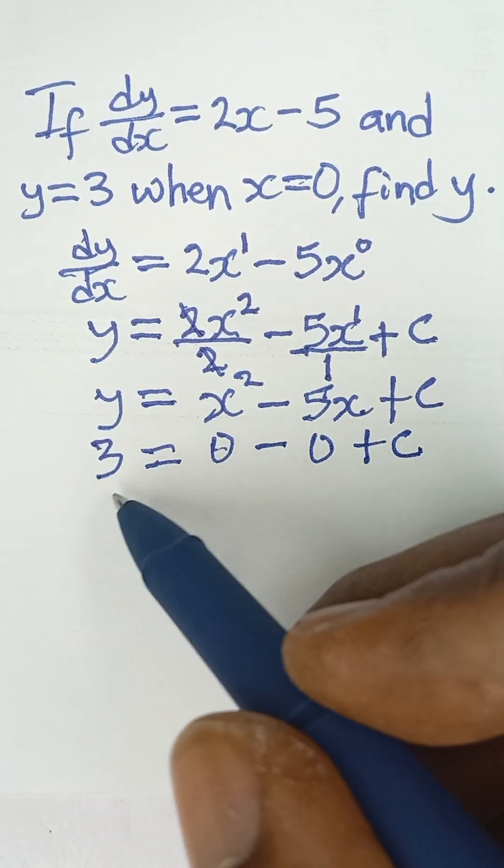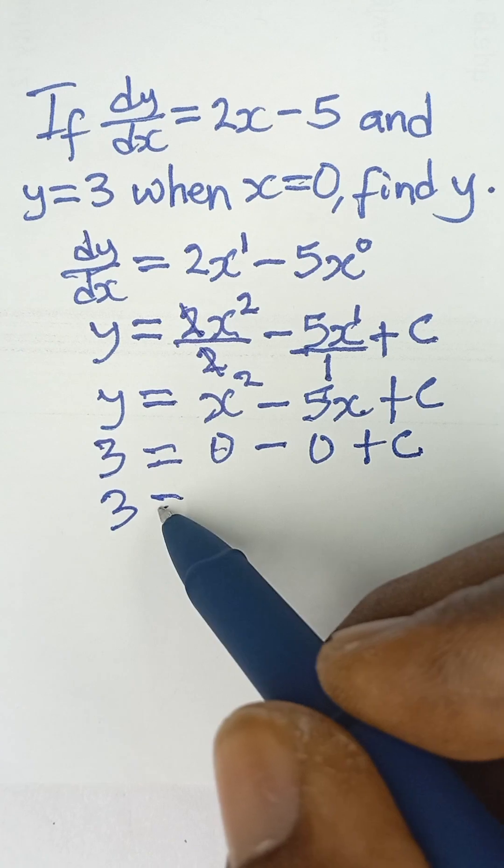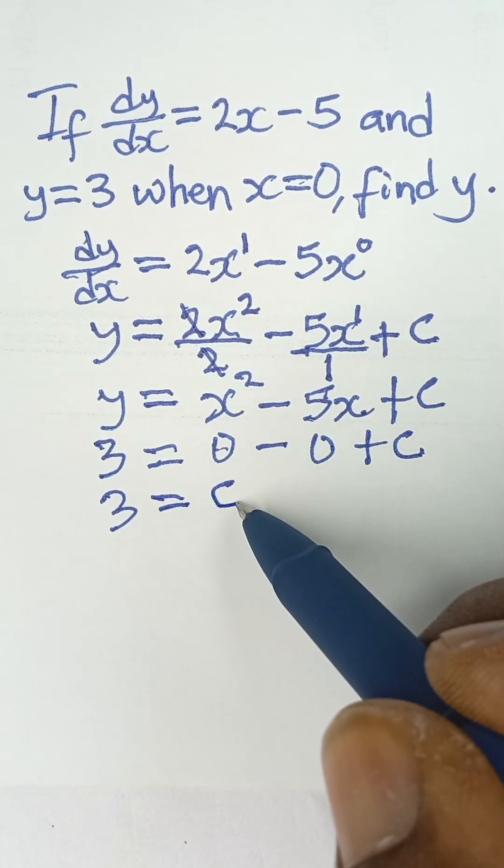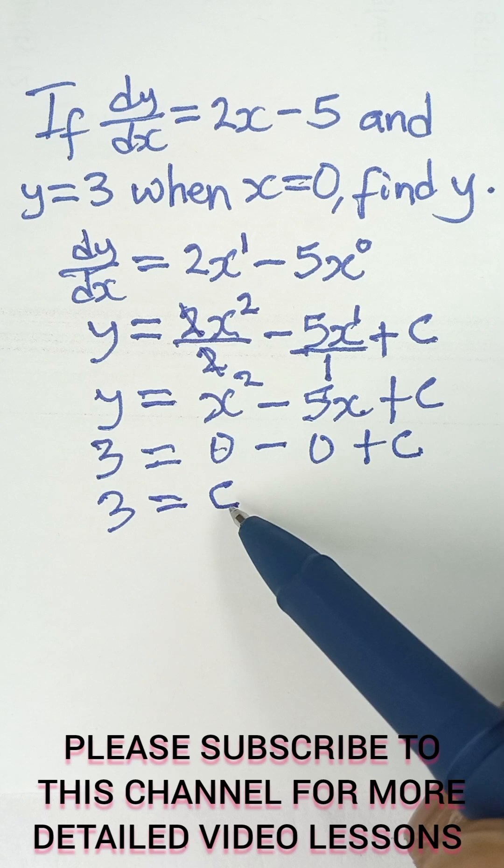So if you look at this, we have 3 is equal to 0 minus 0, which is 0, plus c, and that gives us c. So that tells us that c is equal to 3.